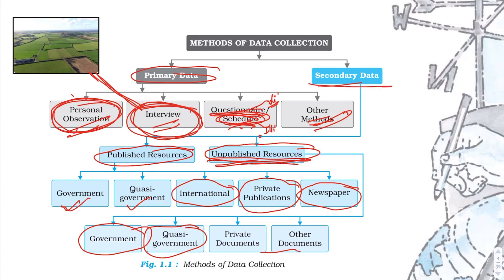For secondary data, we can see published and unpublished data from the government. These include private publications, newspapers, government sources, and unpublished data.